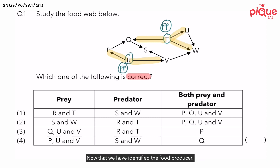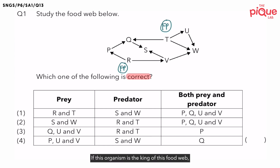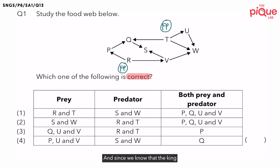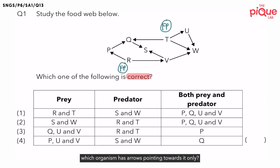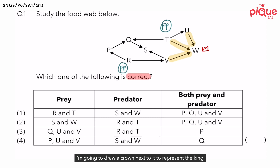Now that we have identified the food producers, let's find out which organism is the king. If this organism is the king of this food web, the king would not get eaten — in fact, the king would eat other organisms. Since the king does not get eaten and eats other organisms, there would only be arrows pointing towards it. Looking at the entire food web, organism W has arrows pointing towards it only, so W is the king. I'm going to draw a crown next to it.